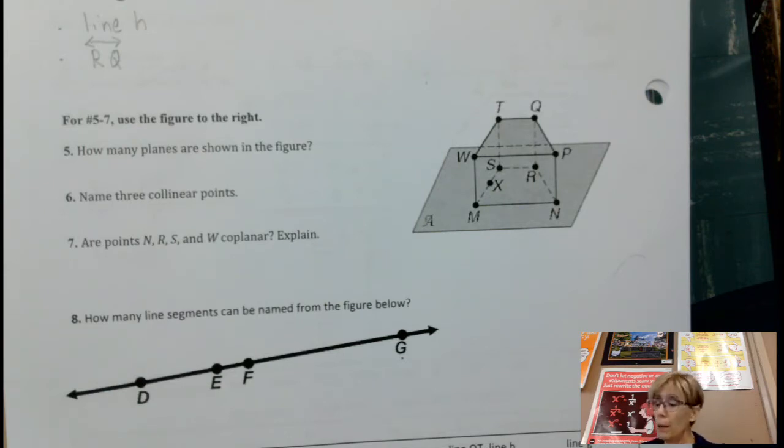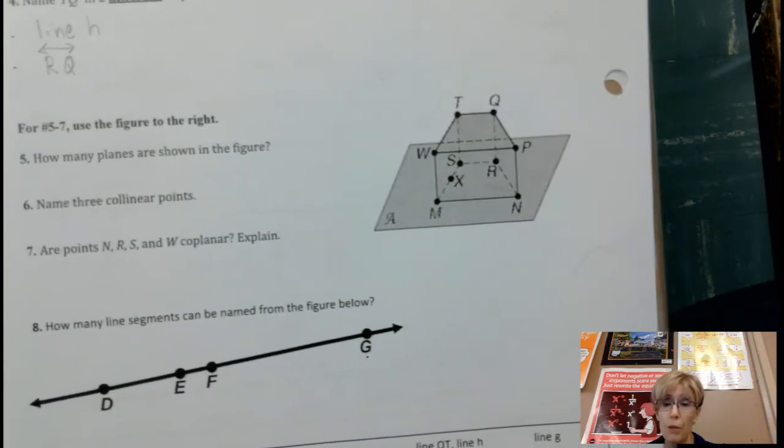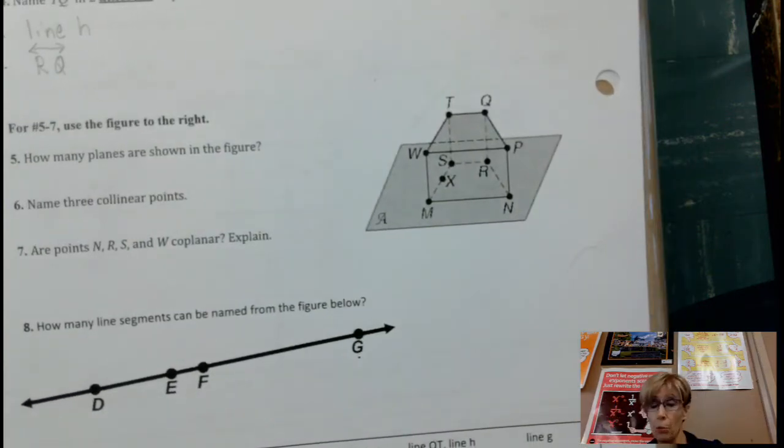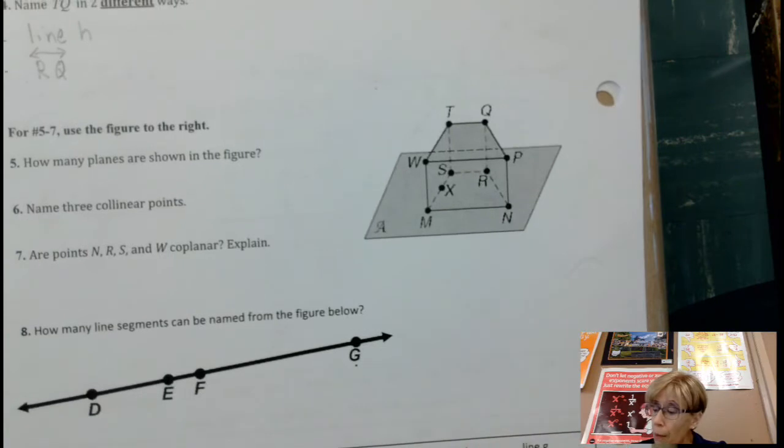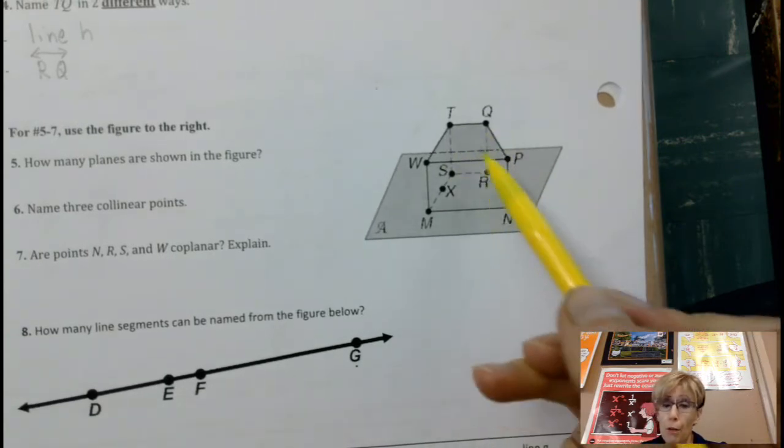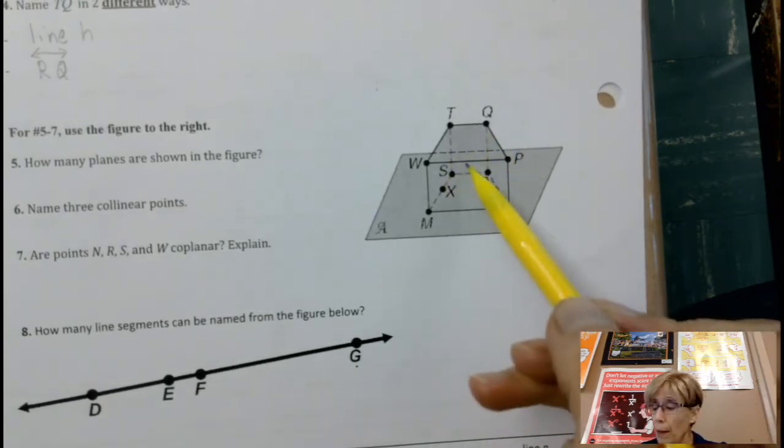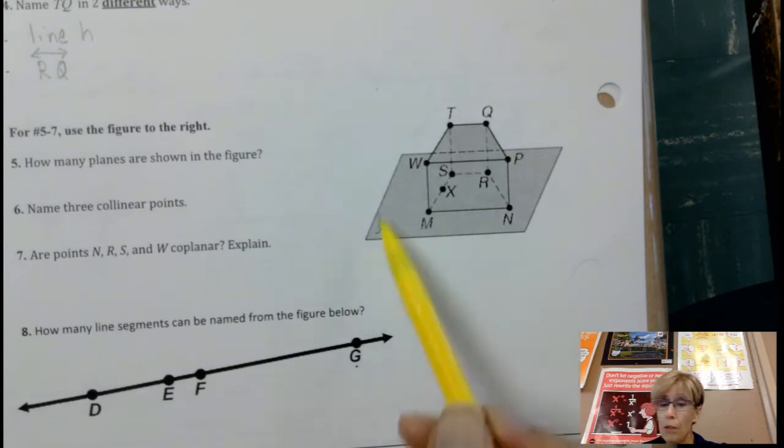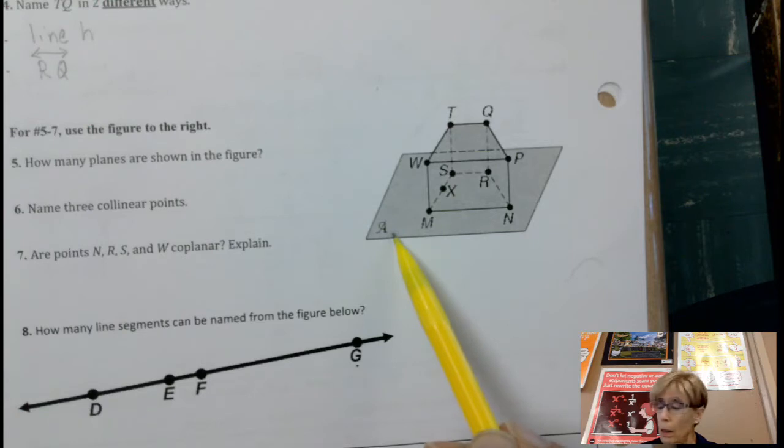Because this one sort of tricked me as well. But we've got this three-dimensional figure, and then we've got this flat surface here. So plane in front of this 3D figure, the back of that 3D figure, so now we're up to three.